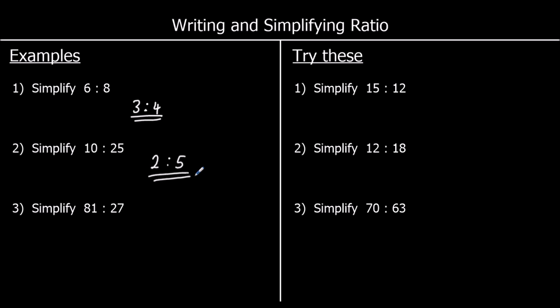Question 3: 81 to 27. They are both in the nine times table. So we divide by 9 to start with — 9 nines make 81, and 9 threes make 27, giving us 9 to 3. But if we look at these, they're both in the three times table, so we can simplify them again. Nine is 3 threes, and 3 is 1 three. So 81 to 27 simplifies to 3 to 1.